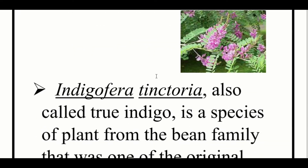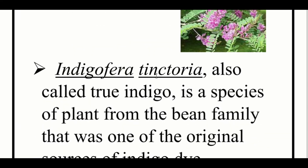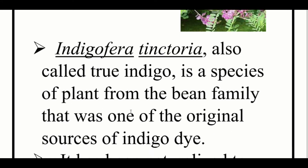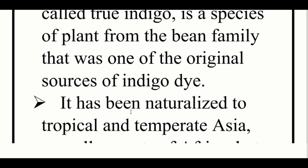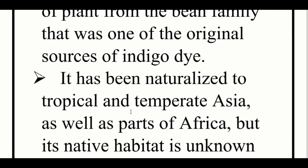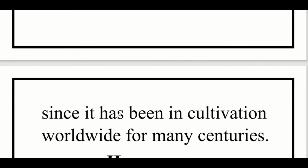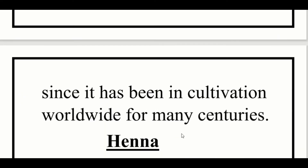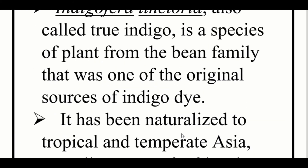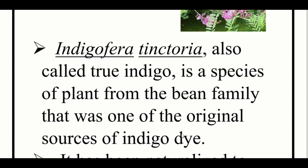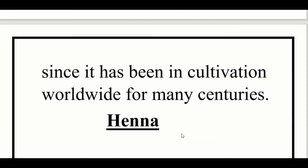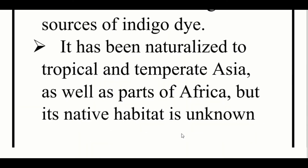Indigofera tinctoria, that is the scientific name, also called true indigo, is a species of plant from the bean family that was one of the original sources of indigo dye. It has been naturalized to tropical and temperate Asia as well as parts of Africa, but its native habitat is unknown since it has been in cultivation worldwide for many centuries.